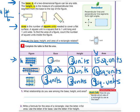So, what relationship do you see among the base, height, and the area? When I multiply the base and the height, I get the area. So, multiply the base and height to get the area.